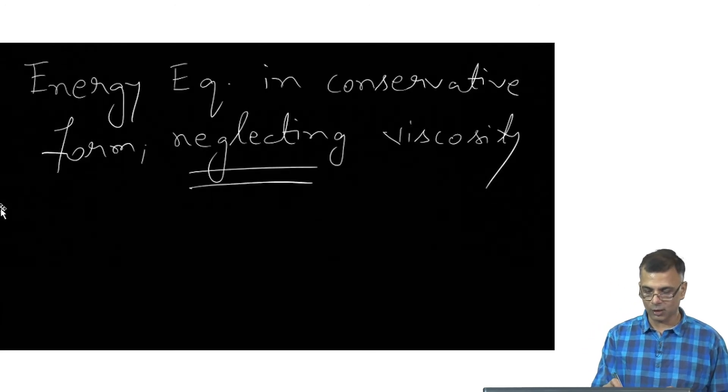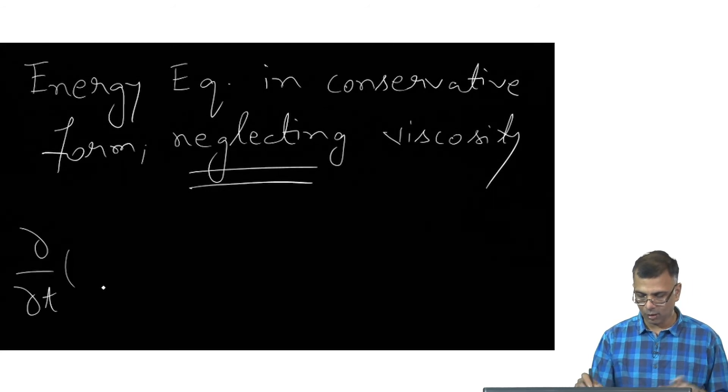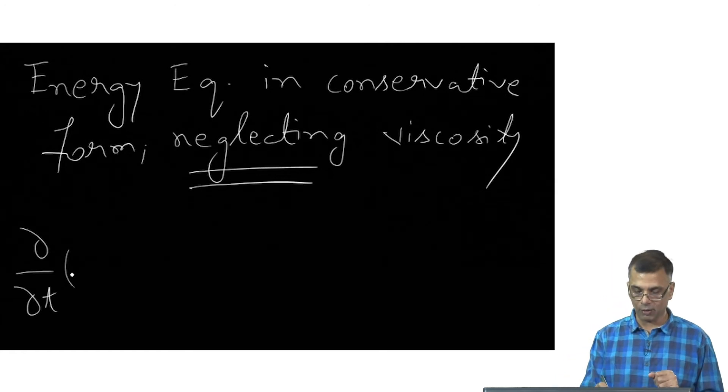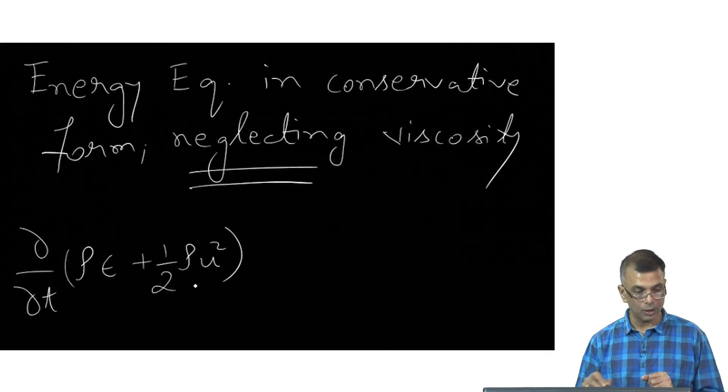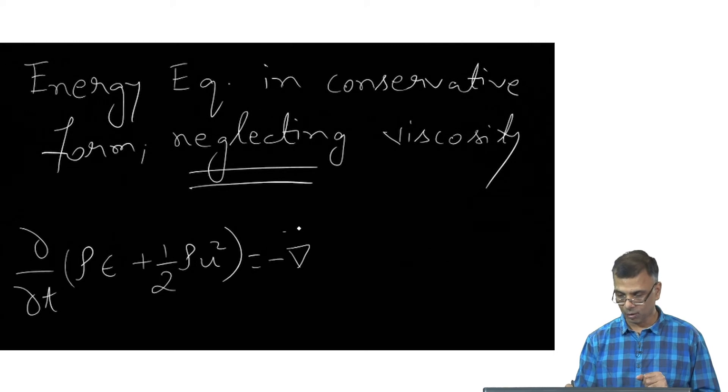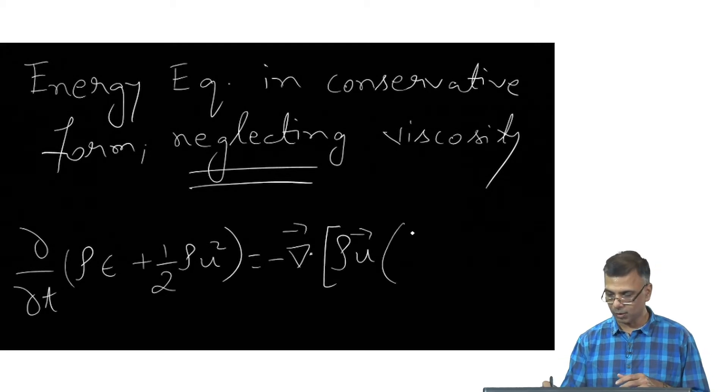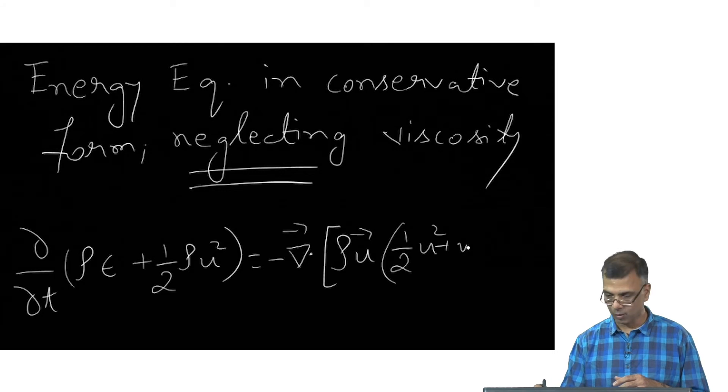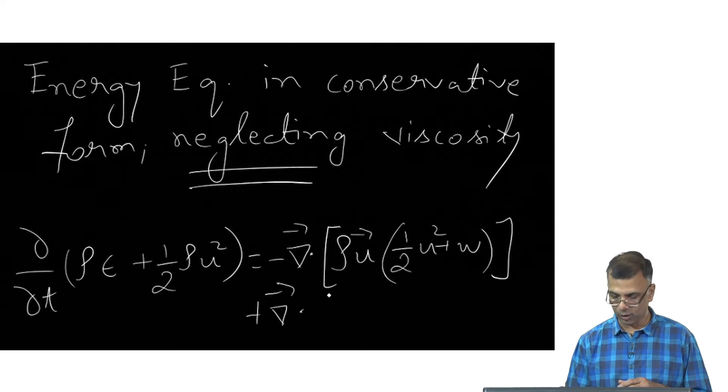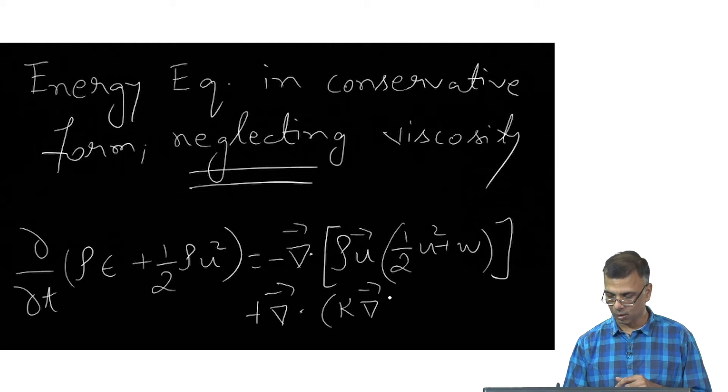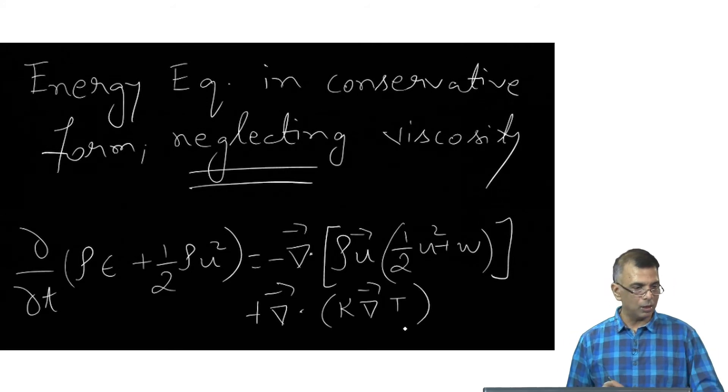I can write down the conservative form of the energy equation as energy density. This is what I am going to write now. I will write partial over partial t of rho times one half u squared plus W, plus divergence of...